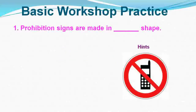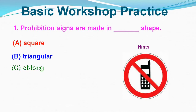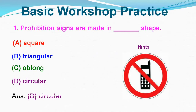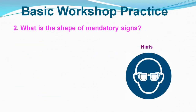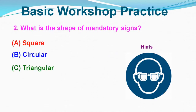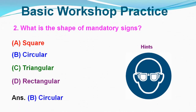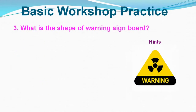Safety Sign Question No. 1: Prohibition signs are made in which shape? Option A: Square, Option B: Triangular, Option C: Oblong, Option D: Circular. Correct answer is Option D, Circular. Question No. 2: What is the shape of a mandatory sign? Option A: Square, Option B: Circular, Option C: Triangular, Option D: Rectangular. Correct answer is Option B, Circular.